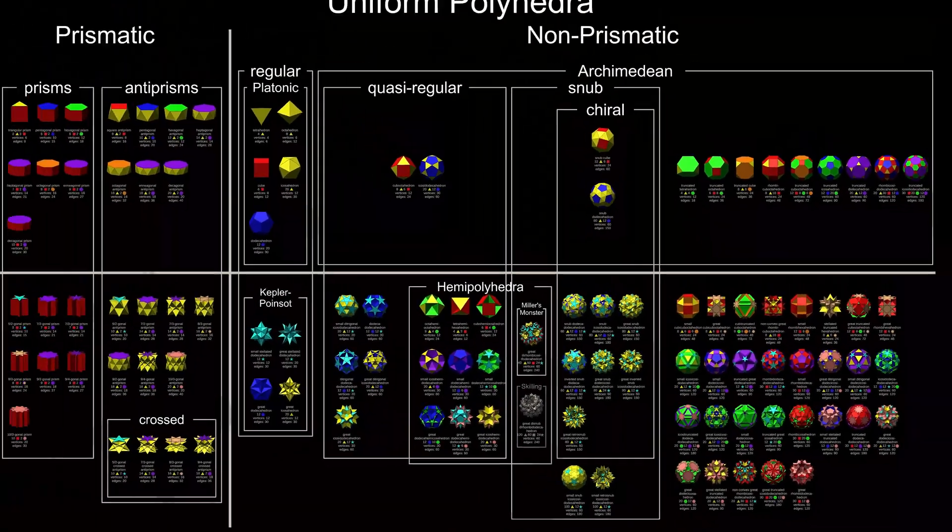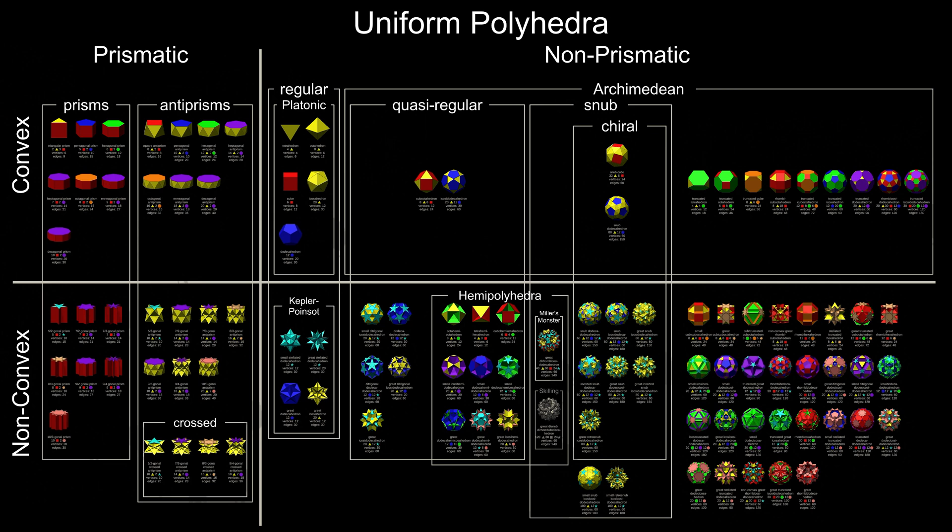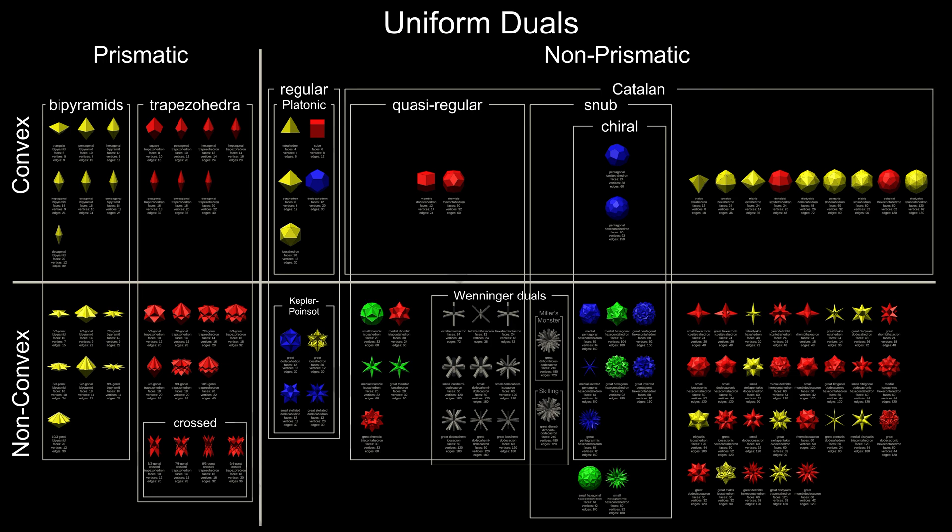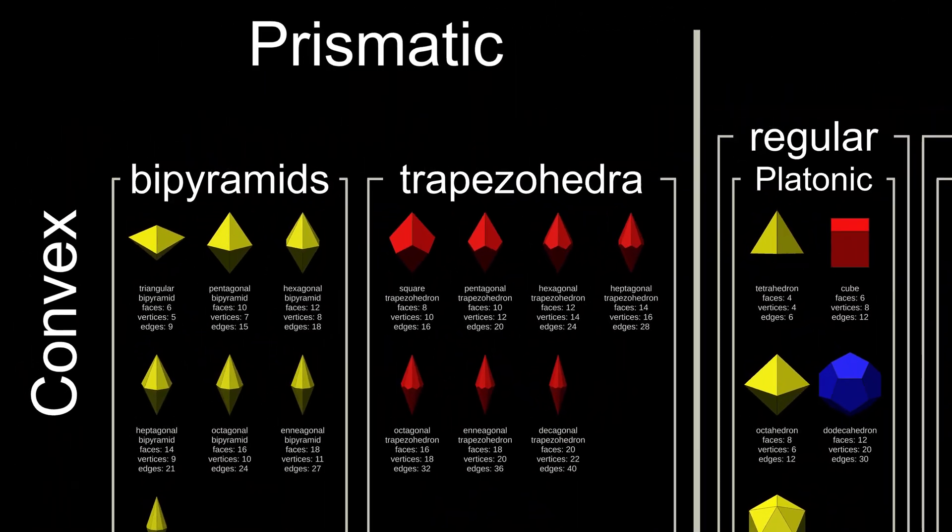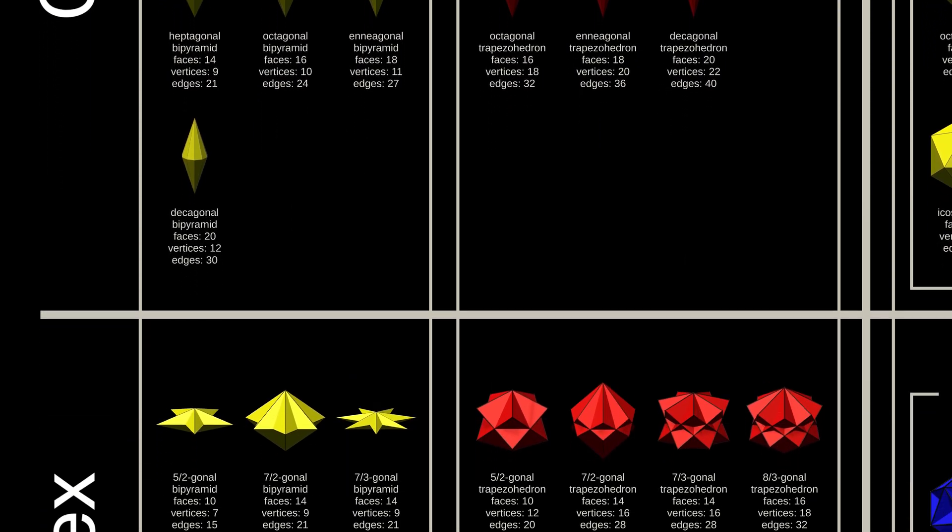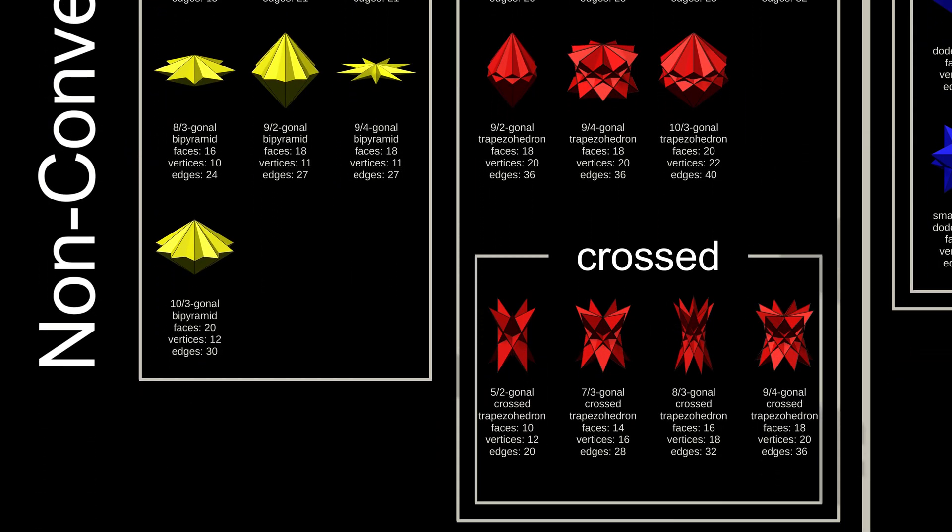Now, if we construct a large sphere around the chart, we can invert it to create a chart of uniform duals. The bipyramids are the duals of the prisms, and the trapezohedra are the duals of the anti-prisms. Crossed trapezohedra also exist.